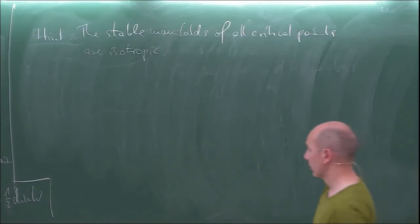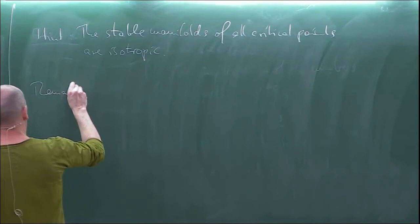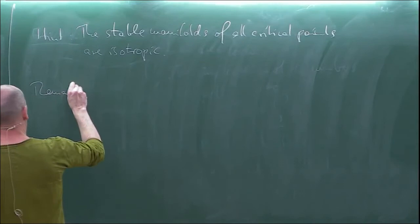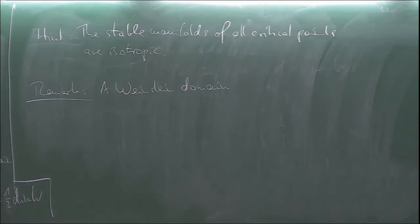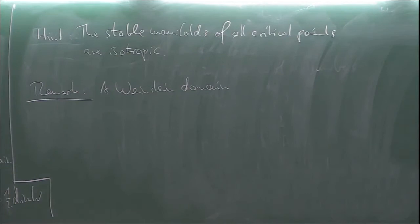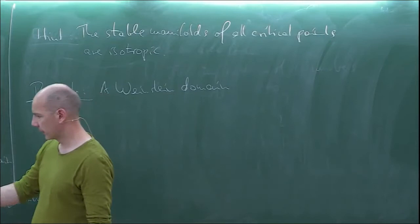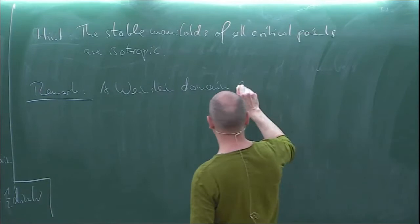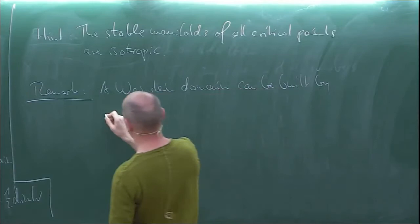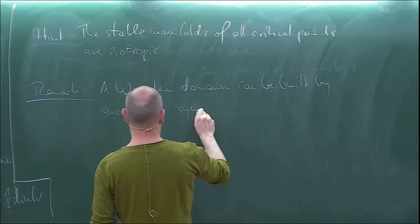Any Weinstein domain can actually be built inductively by attaching Weinstein handles. In Morse theory, you know that you can build your manifold by attaching one k-handle for every critical point of index k. The point is that in this context you can actually do this attachment symplectically — a Weinstein domain can be built by successive symplectic handle attachment.